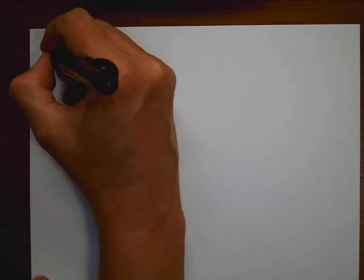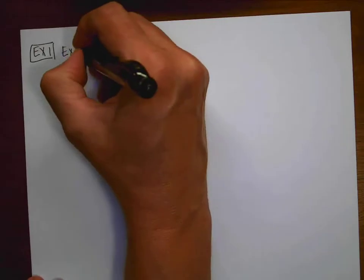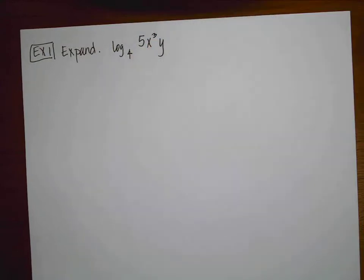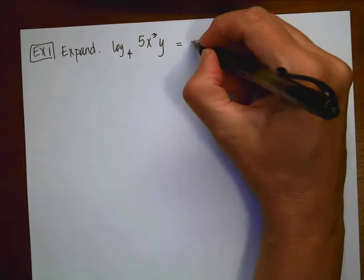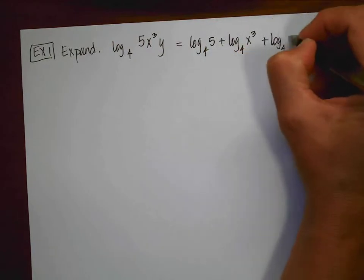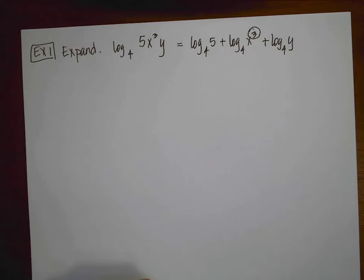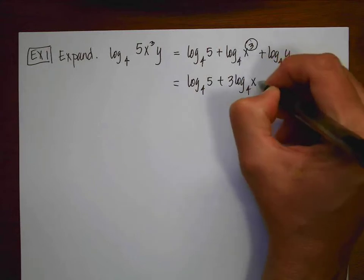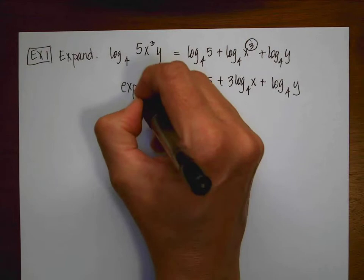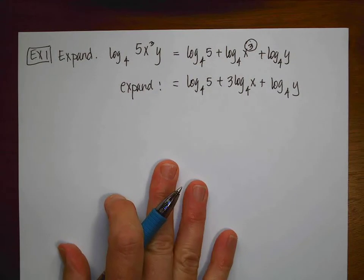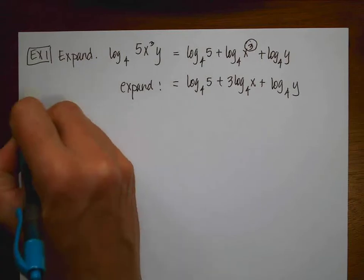Before we solve log equations, we're going to talk about expanding and condensing. Example 1 says expand log base 4 of 5x³y. Start with multiplication: this becomes log base 4 of 5 plus log base 4 of x³ plus log base 4 of y. Now manage the exponent — it goes out front: log base 4 of 5 plus 3·log base 4 of x plus log base 4 of y. Exponents go out front, multiply means add, divide means subtract.